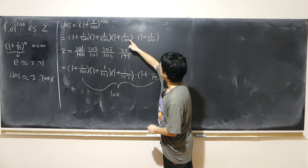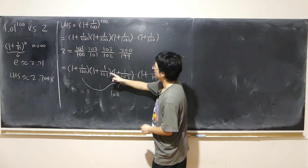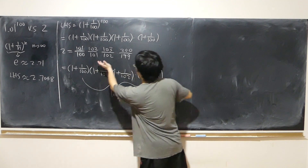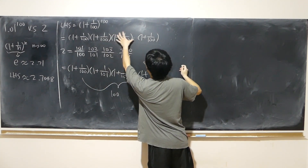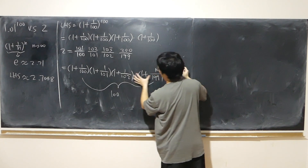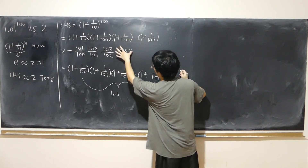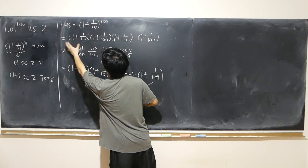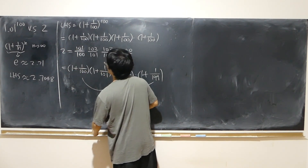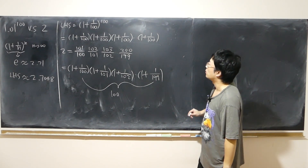Now we compare: 1/100 is a little bigger than 1/101, a little bigger than 1/102, and so on. The first bracket is equal, but each subsequent bracket on the left is a little bigger than the corresponding one on the right. So overall, the left-hand side is strictly bigger than 2.